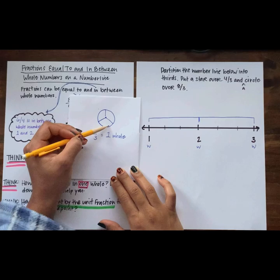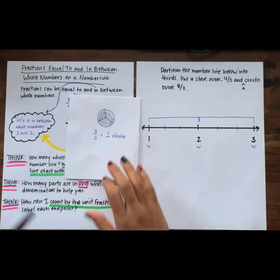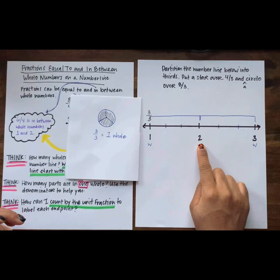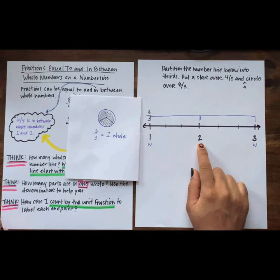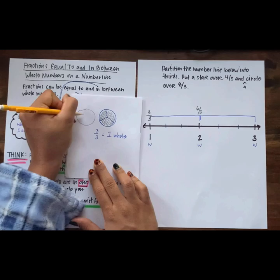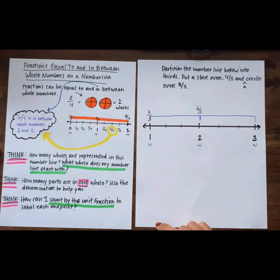If we partitioned a circle into three equal parts and needed to shade in the whole circle, we would shade in all three parts. If three-thirds is the same as one whole, how many thirds do we have at two wholes? Say your answer out loud. That's exactly right — we would have six-thirds. Two wholes means we shade in three more equal parts for a total of six equal parts in two wholes.